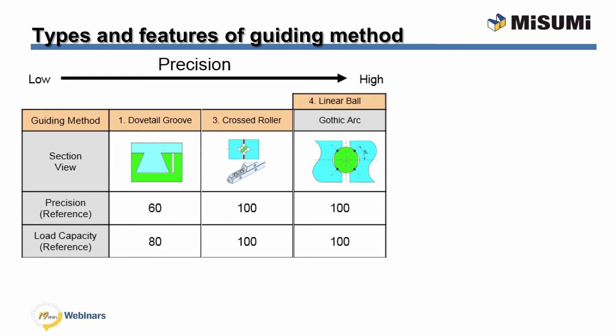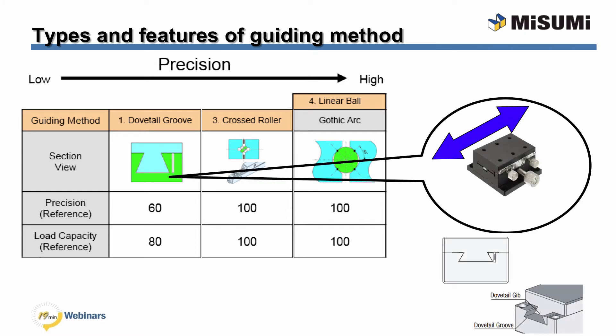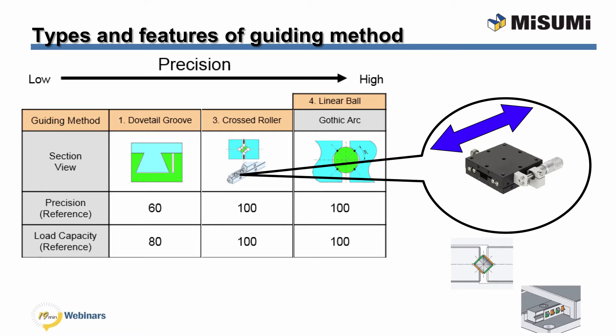Presented here are the different types of guides offered on Misumi stages. Each guide method has a different precision value. The dovetail groove is a sliding contact guide of male and female dovetails, with smooth movement provided by the fitting of male and female groove. Typical applications for the dovetail guide are where high precision is not required — precision reference is at 60% and load capacity is 80% compared to high precision stages. Cross rollers are crossed at 90-degree angles in alternating fashion and enclosed in a rail with a machined v-groove to support the rollers, providing line contact between roller and v-groove for high accuracy and heavy load capacity.